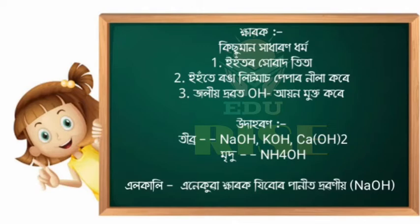We start to make NaCl with acid. Here I have sodium hydroxide, ammonium hydroxide. So when we say ammonium hydroxide, we say ammonium hydroxide, and also sodium hydroxide.